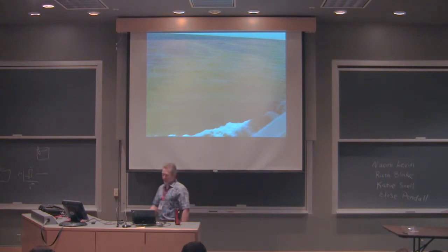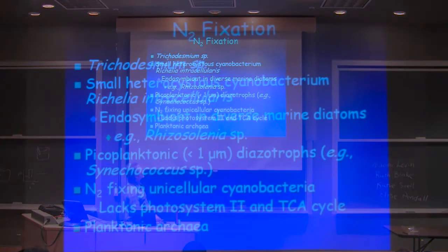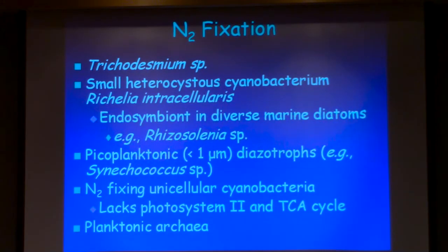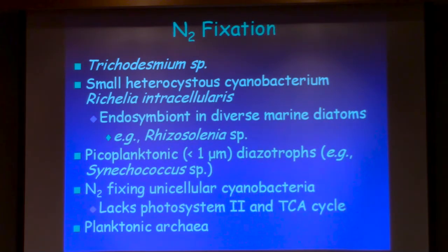So there's been a lot of studies on trichodesmium. But there are a number of different nitrogen-fixing organisms. There are small heterocystis cyanobacteria that are endosymbionts in diatoms — these diatoms are Rhizosolenia and Hemiaulus. They live within the siliceous tests of these diatoms. There's some really nice work by Rachel Foster which has documented that symbiosis.